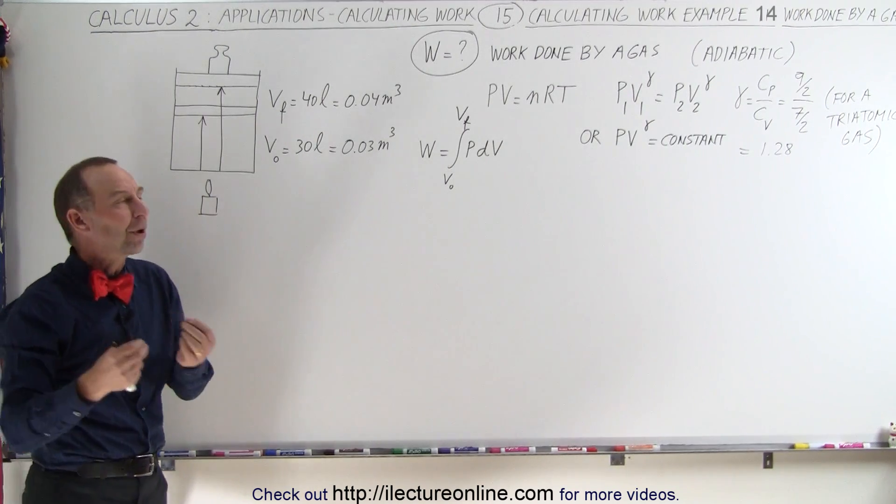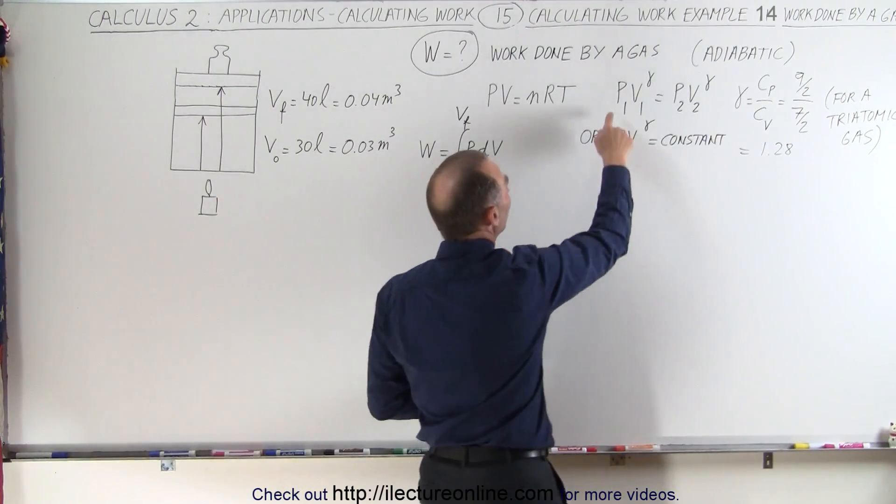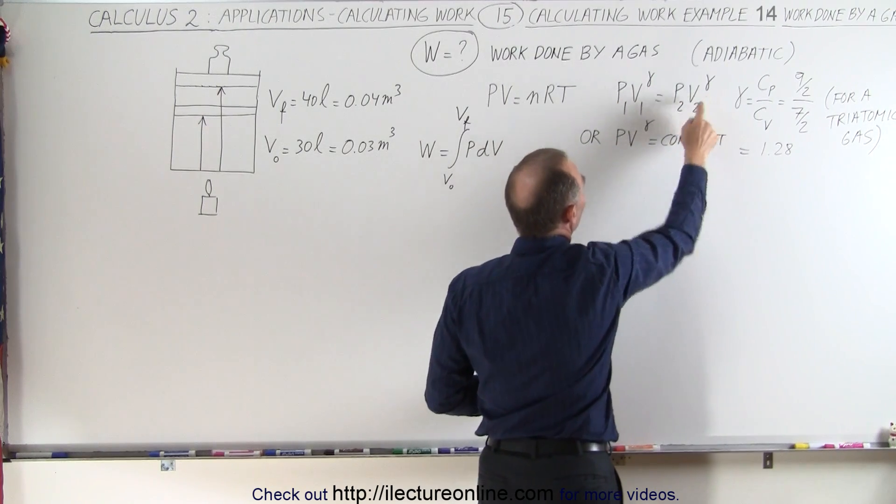We're assuming that the process here is an adiabatic expansion, which means that p1 times v1 to the gamma equals p2 times v2 to the gamma.